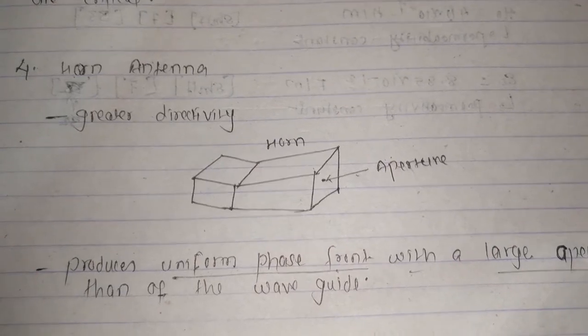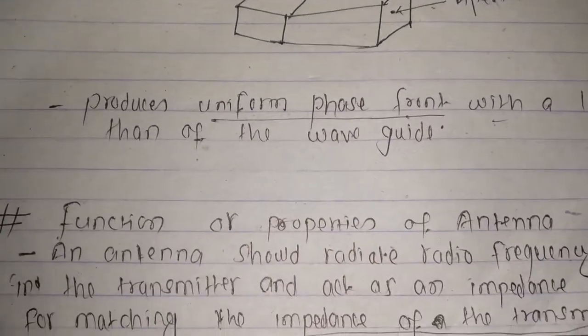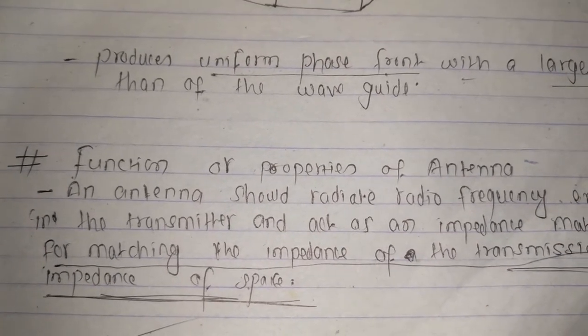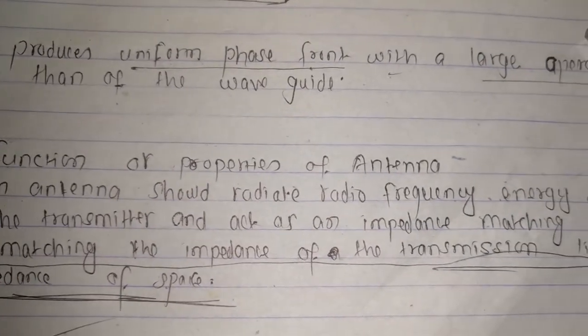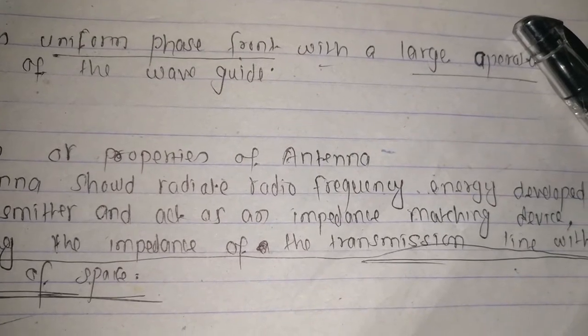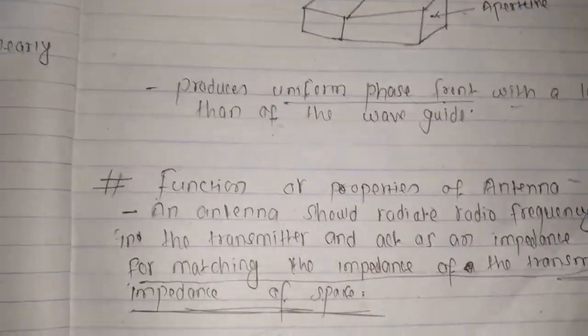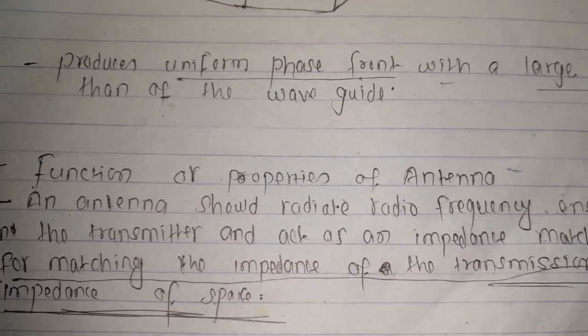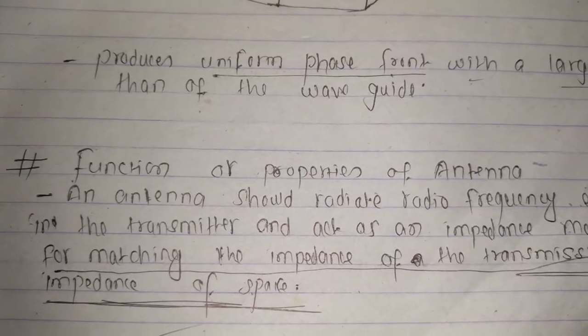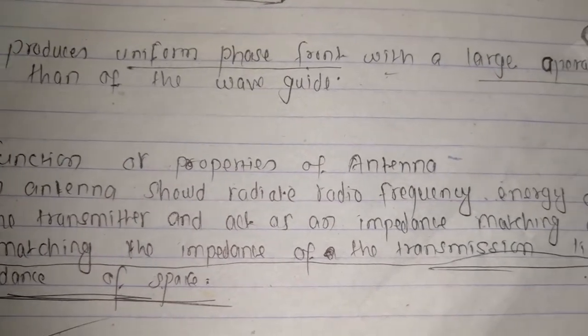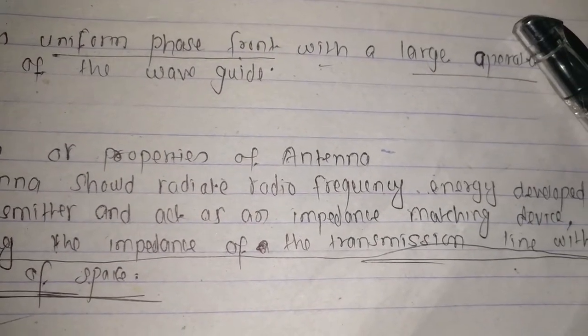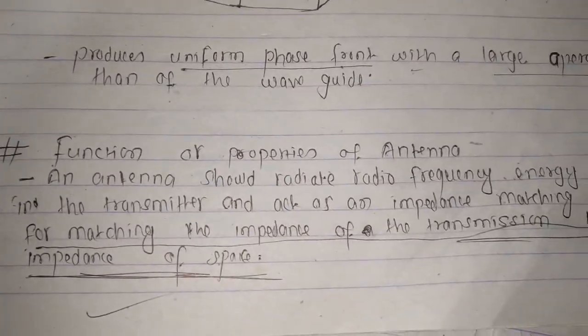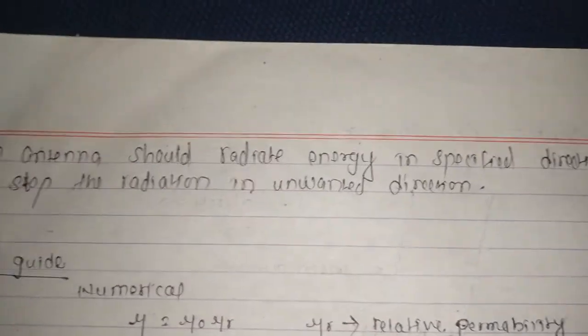Last one is function or properties of an antenna. In the definition, you are clear about it - it transfers energy. Number one: an antenna should radiate the radio frequency energy developed in the transmitter and act as an impedance matching device for matching the impedance of the transmission line with impedance of space.